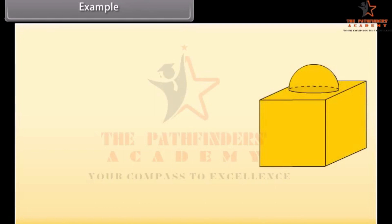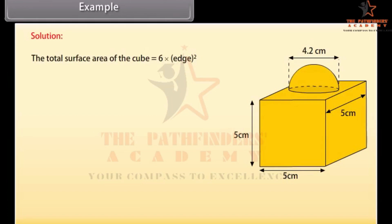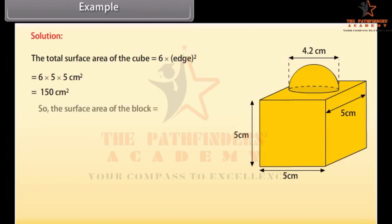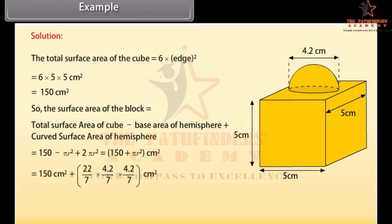Look at the figure. This decorative block is made of 2 solids — a cube and a hemisphere. The base of the block is a cube with edge 5 cm, and the hemisphere fixed on the top has a diameter of 4.2 cm. Find the total surface area of the block. The total surface area of the cube is 6 × edge² = 6 × 5 × 5 = 150 cm². The surface area of the block equals total surface area of cube minus base area of hemisphere plus curved surface area of hemisphere, giving 163.86 cm².